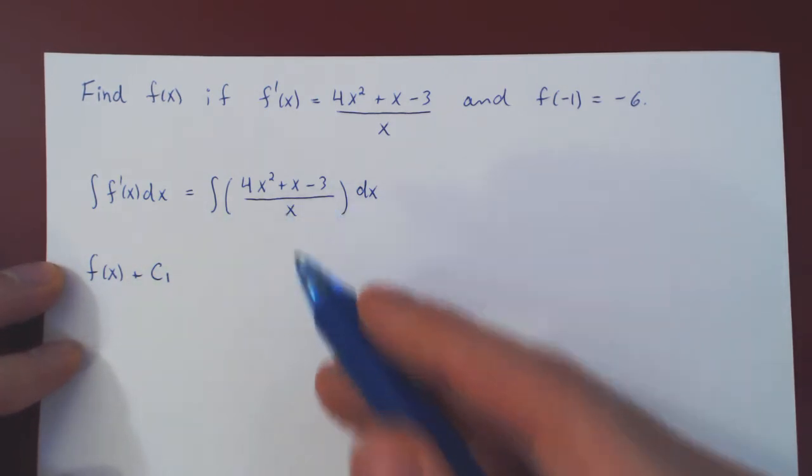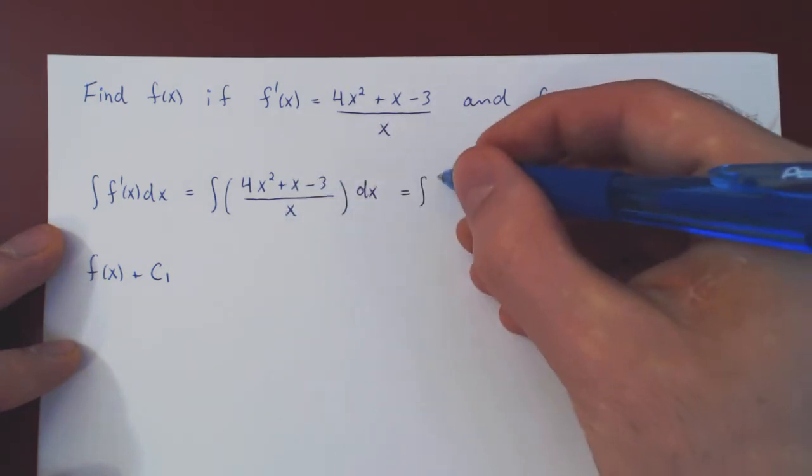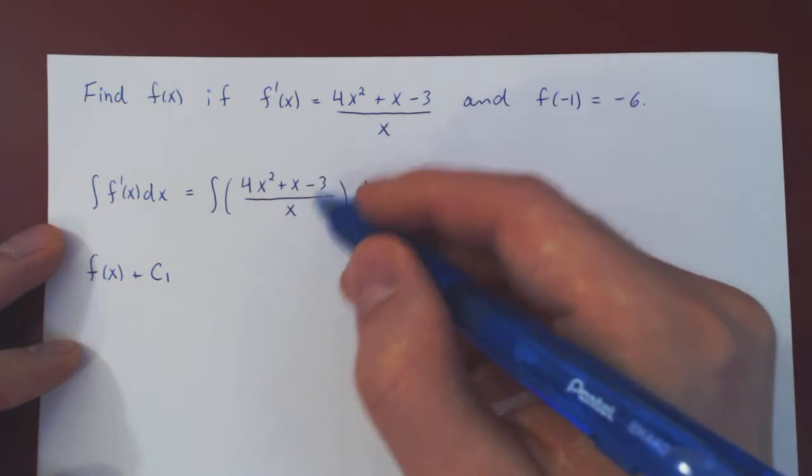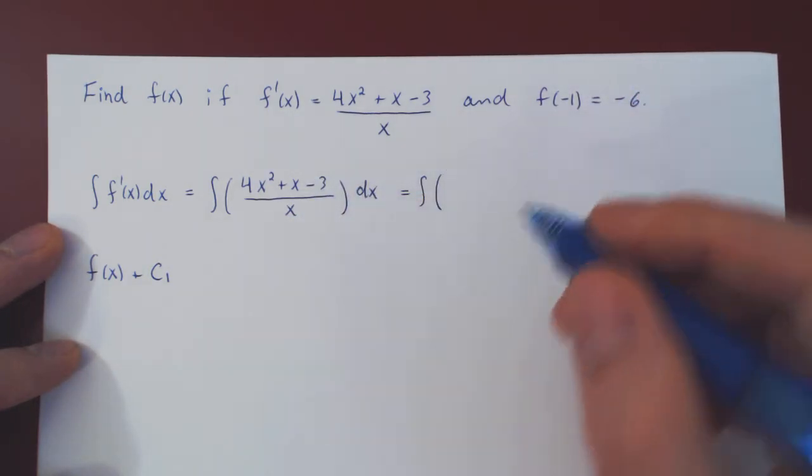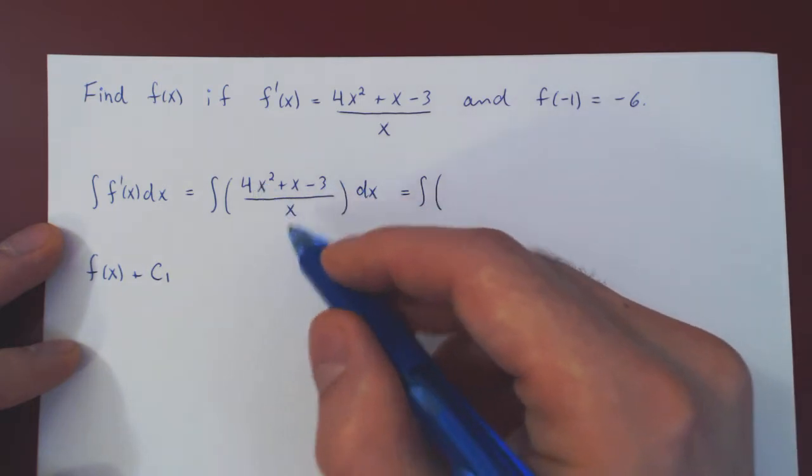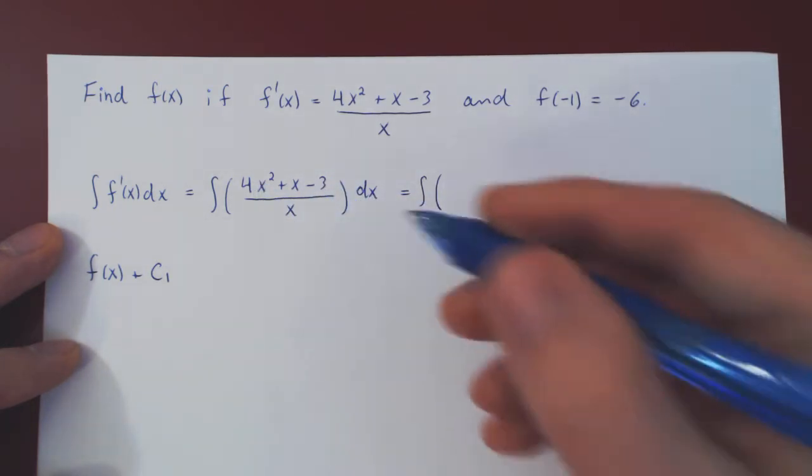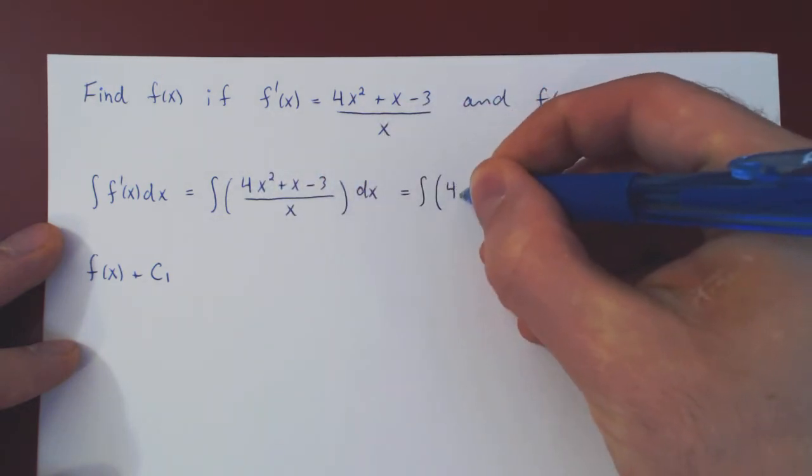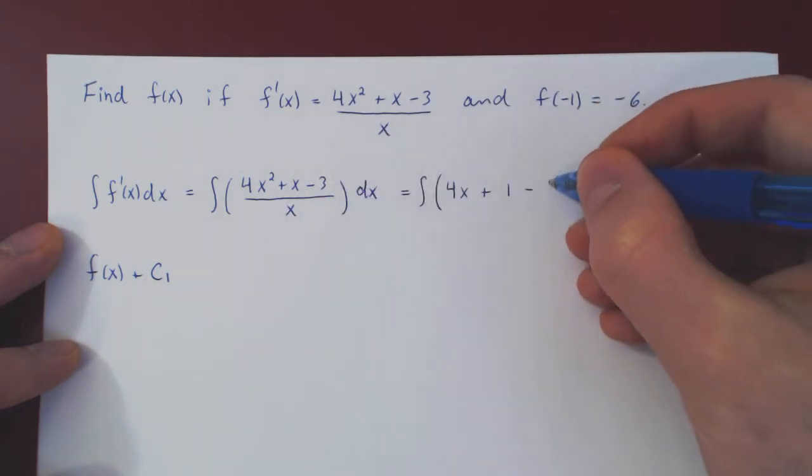What about the right-hand side now? We can't integrate directly over a quotient, but as we're dividing by x only, we can divide through, and then we'll have something we can evaluate using the power rule. We'll see the last term, the exception to the power rule. So 4x² over x is 4x, plus x over x is 1, minus 3 over x, which I will leave as 3 over x.